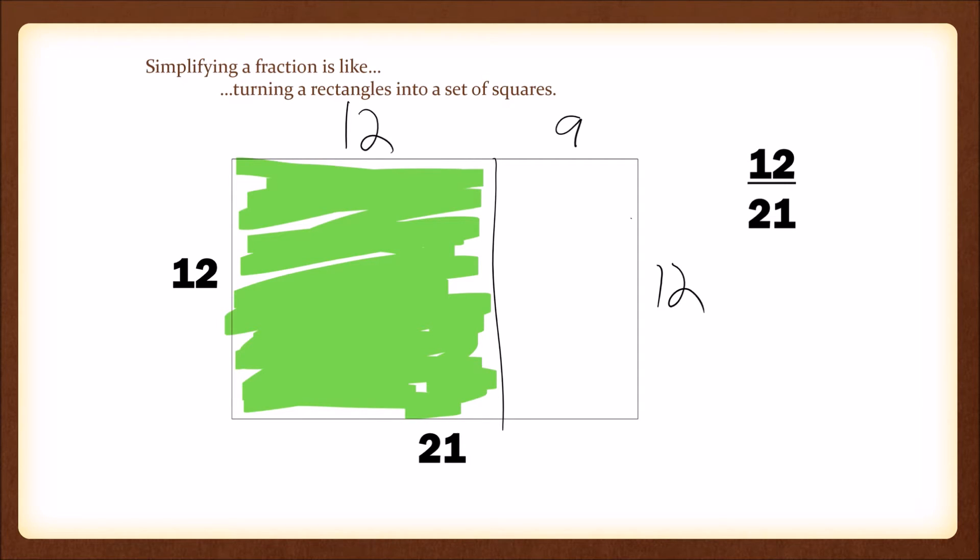A rectangle with a length of 9 and a width of 12. The largest square possible in that rectangle is going to be a 9 by 9 square. We'll remove that and we are left with a smaller rectangle that is 3 by 9.